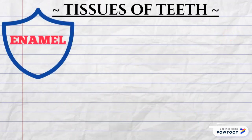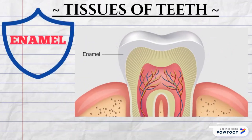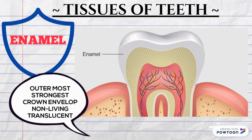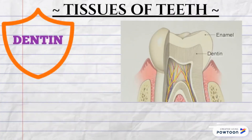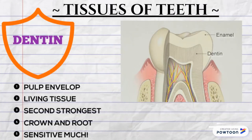Now the tissues of the teeth. Number one: enamel. Enamel is the outermost surface of the tooth. It is the strongest, avascular, acellular, and translucent, and it envelopes the dentine and pulp. Number two: dentine. Dentine envelopes the pulp and protects it. It is a living tissue and the second strongest structure in the oral cavity. It is present in both the crown and root, and it is responsible for sensitivity.